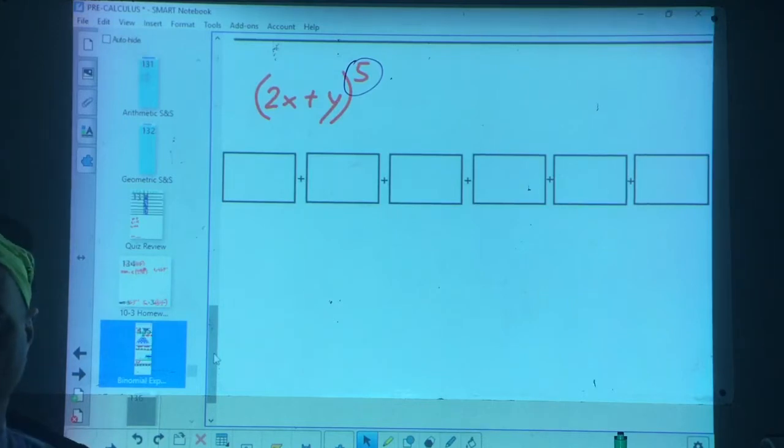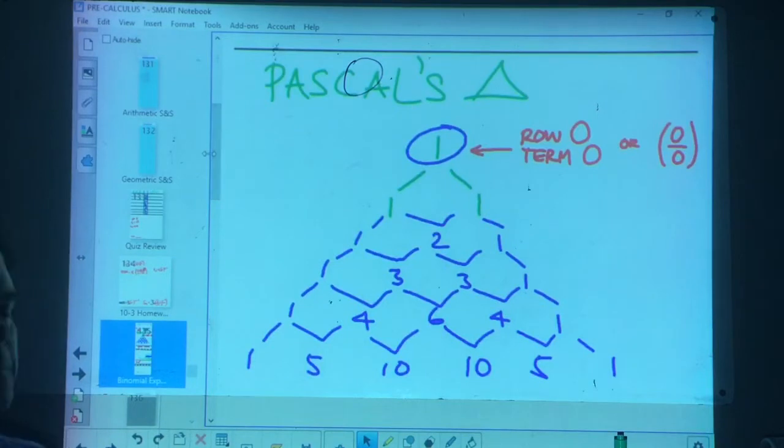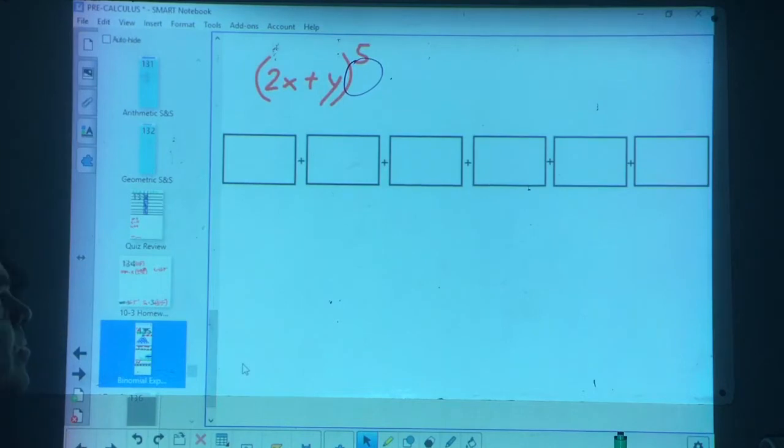So, we could go all the way back to here. And again, we need row five. Row zero, one, two, three, four, five. It's this bottom one. So, 1, 5, 10, 10, 5, 1.